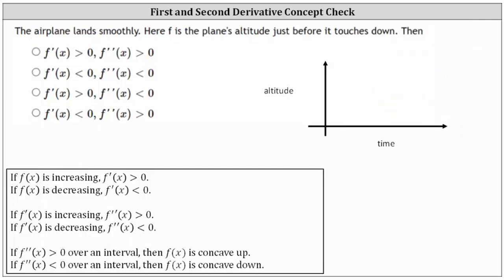For the second example, we have an airplane that lands smoothly. Here, f is the plane's altitude just before it touches down. We know as a plane lands, the altitude is going to be decreasing, and therefore f prime of x is going to be less than zero or negative. However, in order to have a smooth landing, the altitude would have to be decreasing at an increasing rate, and therefore the second derivative is going to be positive or greater than zero.